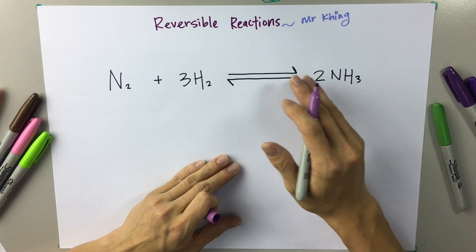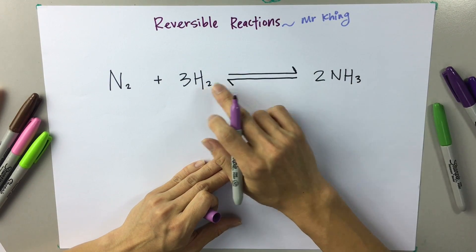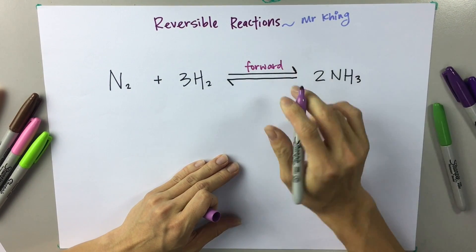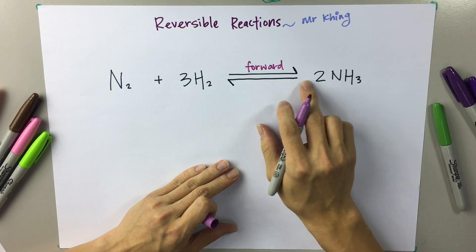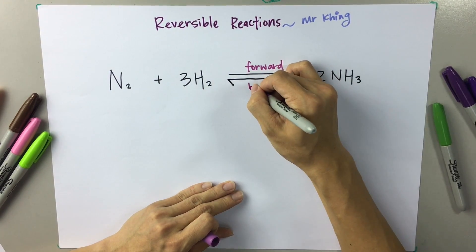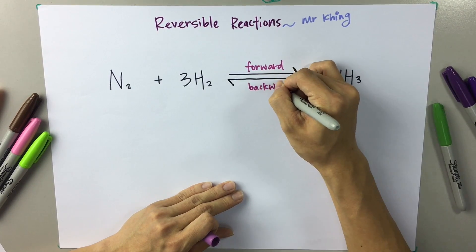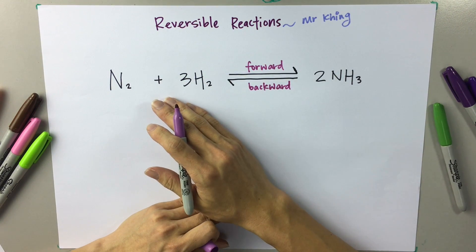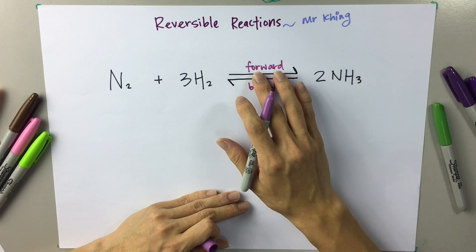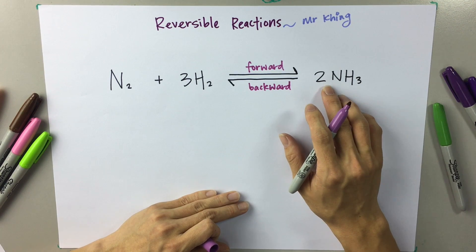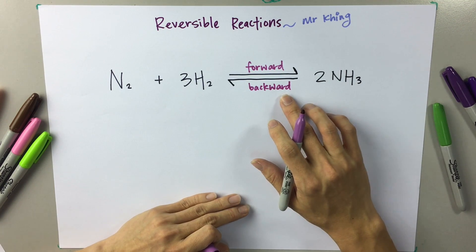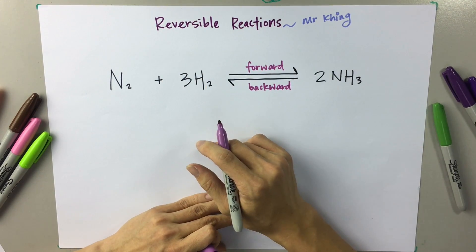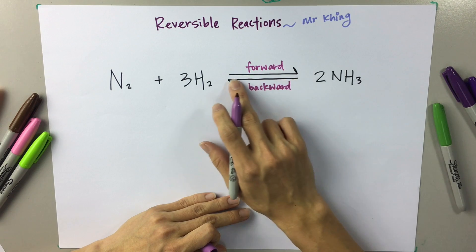From left to right, the reaction is called the forward reaction. From right to left, it is what we call the backward reaction. It is called a reversible reaction because the reactants will undergo the forward reaction to form products, or the products can undergo the backward reaction to form back the reactants. That's why we call it reversible reaction, and it is represented by this symbol.